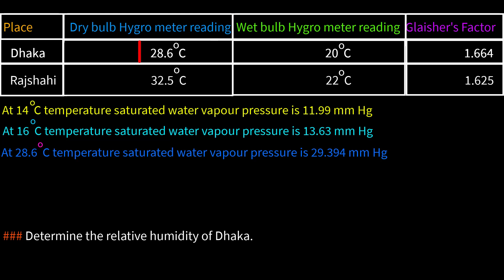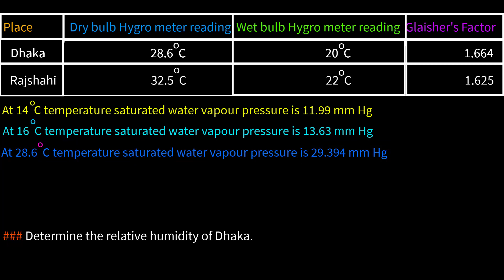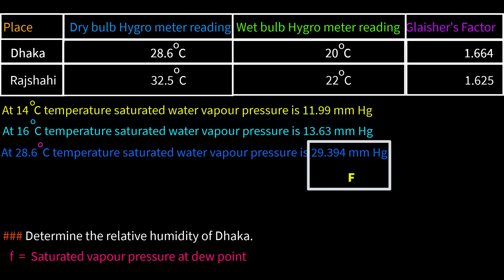Since air temperature or dry bulb temperature is always given in the stimulus, we determine capital F first. The dry bulb hygrometer reading temperature for Dhaka is 28.6°C. From the stimulus, at this temperature the saturated water vapor pressure is 29.394 mmHg. Therefore, capital F equals 29.394 mmHg.